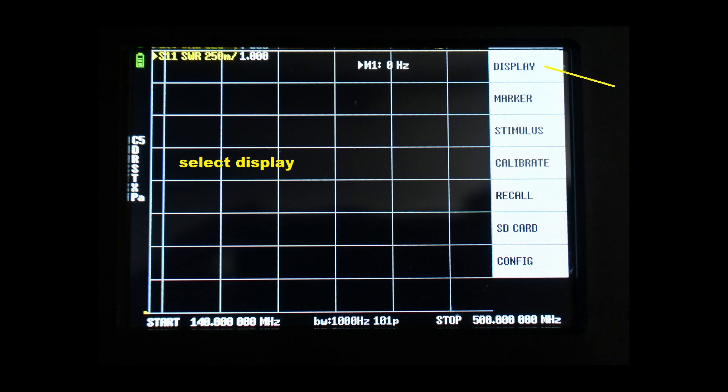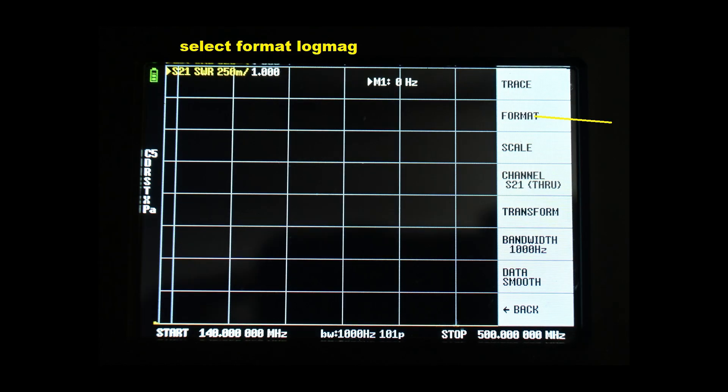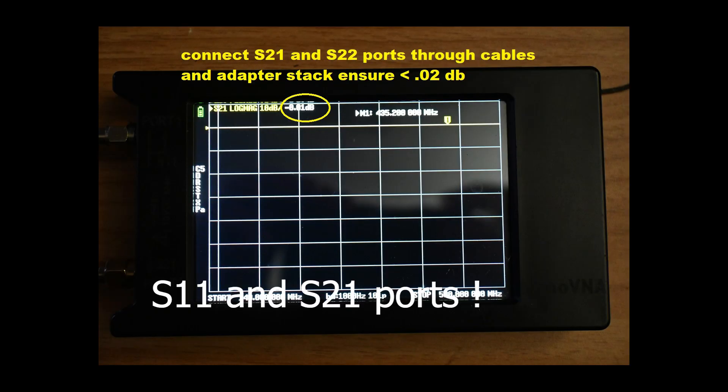Next we will select the display menu. In that menu we will select our S21 port in the channel menu and then we will go to our format menu and select log mag, and then we will connect the cabling from our S11 and S21 port together through our test cabling and adapter stack. Then we will move our marker a tad and ensure that our initial through measurement fluctuates less than two hundredths of a dB.